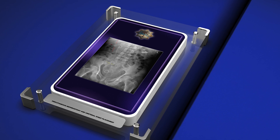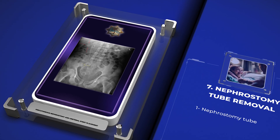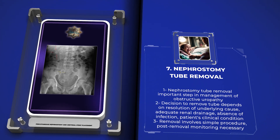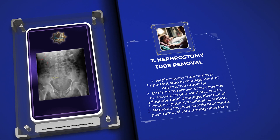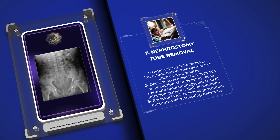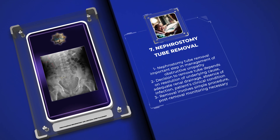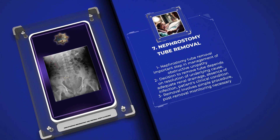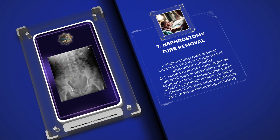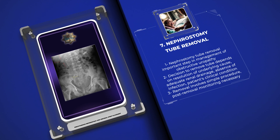Nephrostomy tube removal is an important step in the management of obstructive uropathy. The decision to remove the nephrostomy tube depends on several factors, including the resolution of the underlying cause of obstruction, adequate renal drainage, absence of infection, and the patient's overall clinical condition. Removal of the nephrostomy tube typically involves a simple procedure, and careful post-removal monitoring is necessary to ensure proper urinary flow and absence of complications.